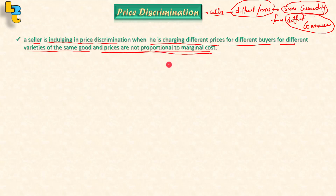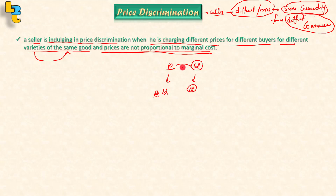For example, if a unit of marginal cost is 10 rupees and its price is 12 rupees, then our seller will make a different variety of the same goods and charge 12 rupees. But the price of another variety is 18 rupees. You can see that the marginal cost is 10 rupees, but there is a lot of difference in price. So we also call this price discrimination.